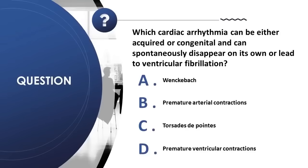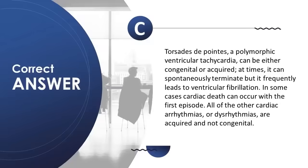Question 26: Which cardiac arrhythmia can be either acquired or congenital and can spontaneously disappear or lead to ventricular fibrillation? A) Wenckebach, B) premature atrial contractions, C) torsades de pointes, D) premature ventricular contractions. Correct answer is C. Torsades de pointes, a polymorphic ventricular tachycardia, can be congenital or acquired; it can spontaneously terminate but frequently leads to ventricular fibrillation. In some cases cardiac death can occur with the first episode. All other arrhythmias listed are acquired, not congenital.